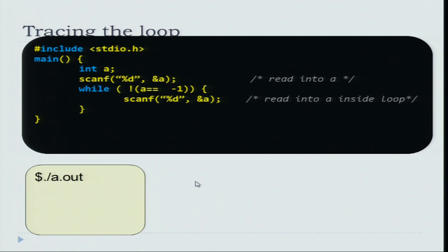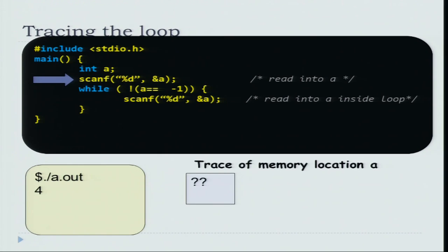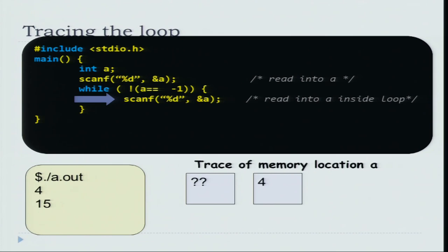Let us trace the execution of the loop on a sample input to understand how it works. I will represent memory location a and its current content in a box. I run the compiled program and enter the number 4. You scan the number 4, so memory location a becomes 4. Since 4 is not minus 1, you enter the loop. Let us say the next number is 15. You read the number into a, so memory location a is now 15. 15 is not minus 1, so you again enter the loop.